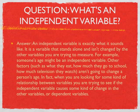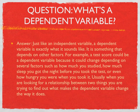We'll also refer to that as effect. A dependent variable is just like an independent variable, except that a dependent variable is exactly what it sounds like — it is something that depends on other factors. For example, a test score could be a dependent variable because it could change depending on several factors, such as how much you studied, how much sleep you got the night before you took the test, or even how hungry you were when you took the test. Usually, when you're looking for a relationship between two things, you are trying to find out what makes the dependent variable change the way it does.